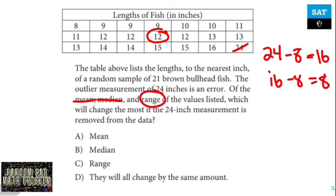When you have an outlier, the median should not change, or it won't change that much.